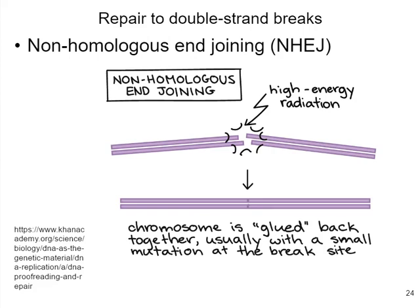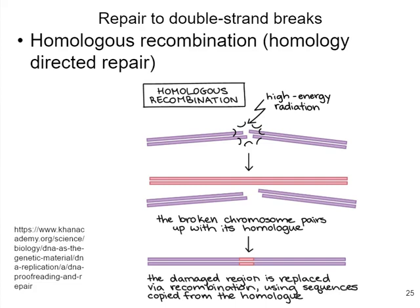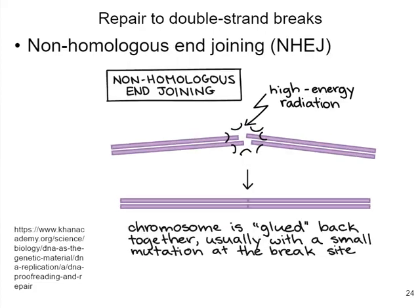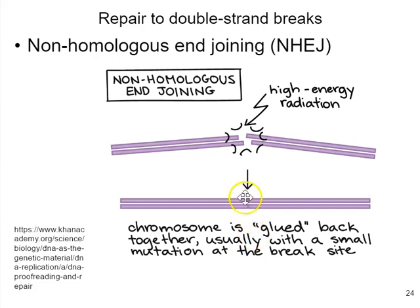Our cells have ways of coping with double-stranded breaks, and there are two systems we'll look at: non-homologous end joining and homology-directed repair, also called homologous recombination. Non-homologous end joining means the cell uses a set of proteins — including REC-A as one example — takes the two broken ends, and literally just glues them back together. There is a very high error rate right at the end, so it's very easy to get a mutation or change relative to what the strand was before it was broken.